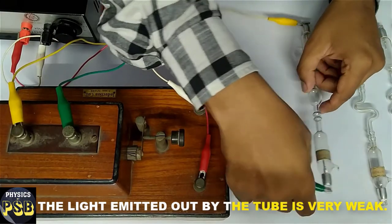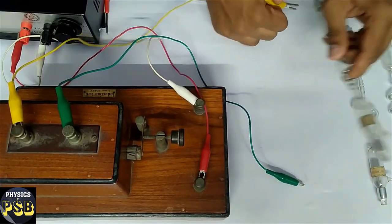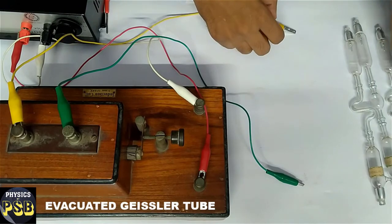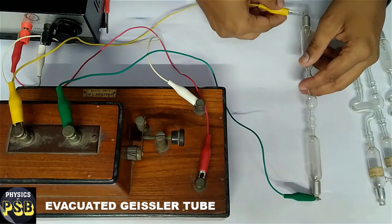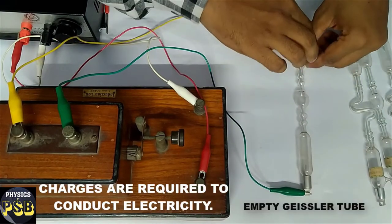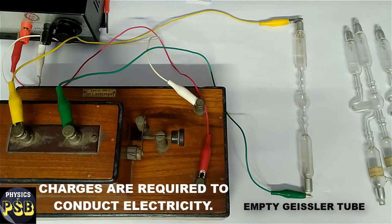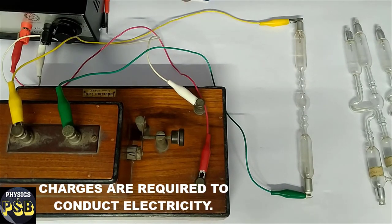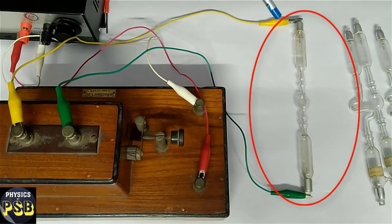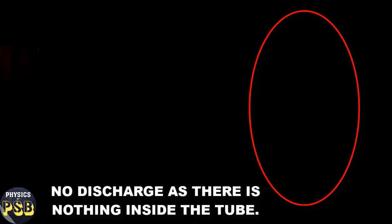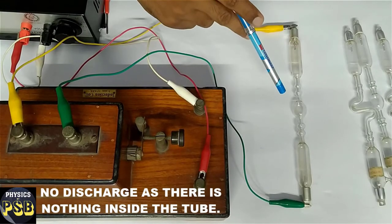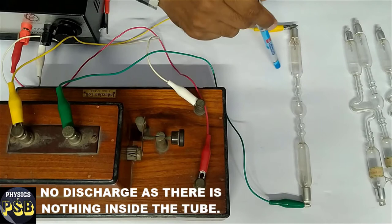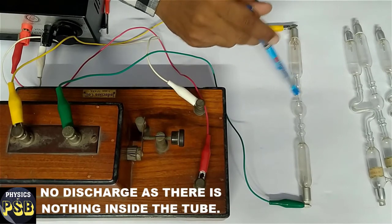Here I replaced the hydrogen tube with another tube. This is evacuated from inside. It has nothing inside. I have passed current. Here you can observe no light is emitted. This shows that no discharge occurs in this tube as it has nothing inside.